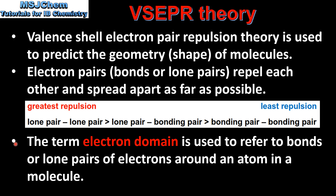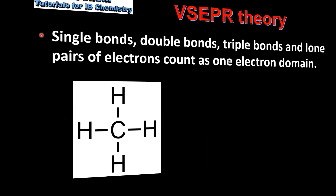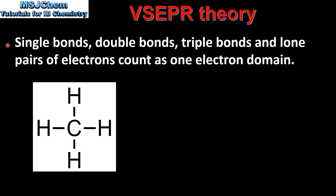The term electron domain is used to refer to bonds or lone pairs of electrons around an atom in a molecule. Single bonds, double bonds, triple bonds and lone pairs of electrons each count as one electron domain.